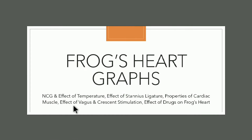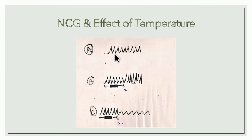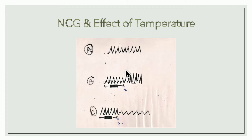The last section is frog's heart graphs. The normal cardiogram of the frog's heart shows two spikes per heartbeat — one small contraction due to atrial contraction (atrial systole) and one large contraction due to ventricular contraction (ventricular systole). This is the normal cardiogram of the frog's heart.